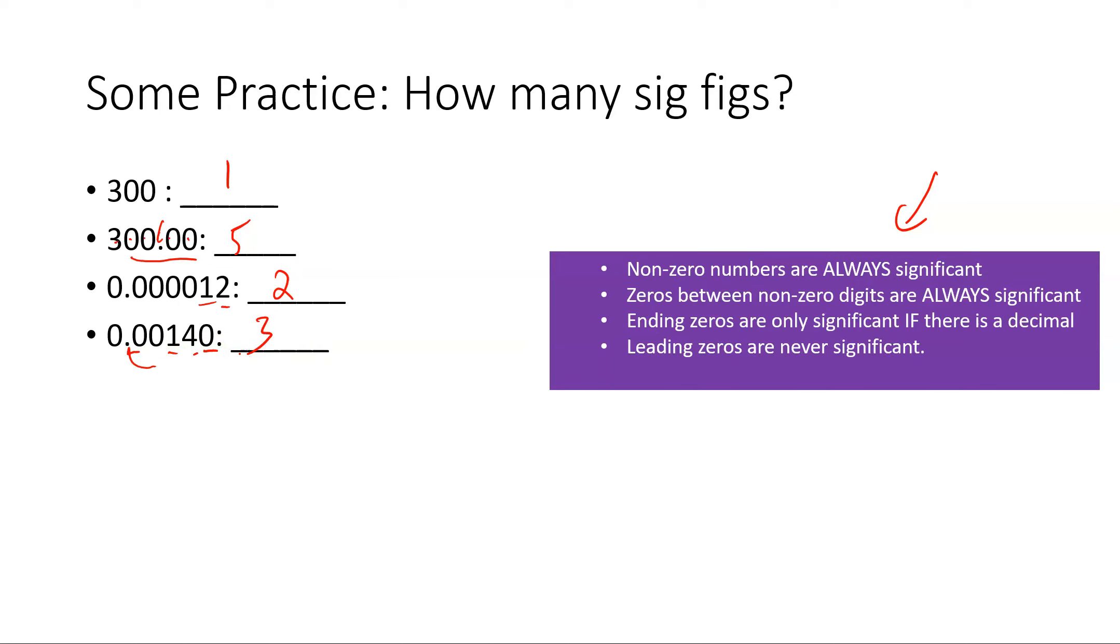101: the ones are both, so that makes one and two. The zero is as well because it's between, so that makes three sig figs.